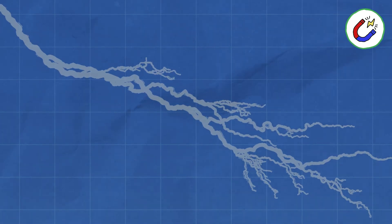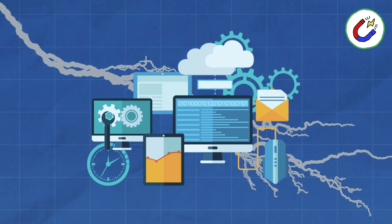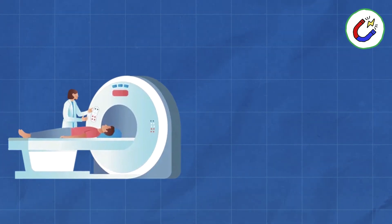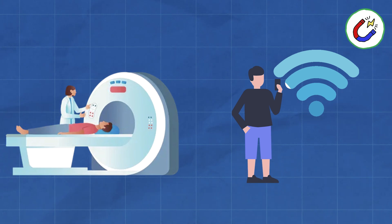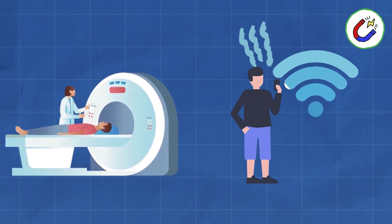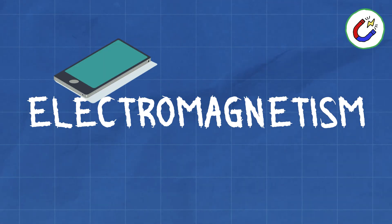It's the invisible force behind countless technologies, from medical imaging such as MRI machines that use powerful magnets, to wireless communication like Wi-Fi that relies on electromagnetic waves. But electromagnetism isn't just about gadgets and gizmos.